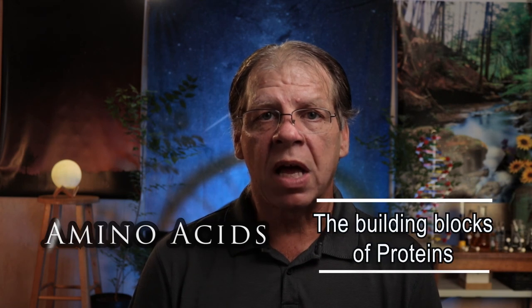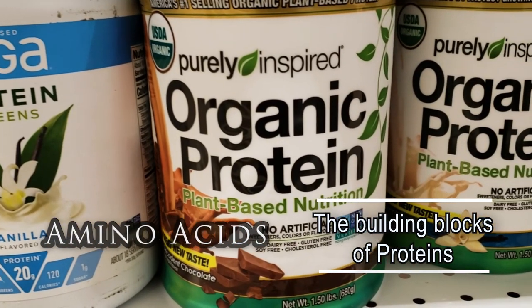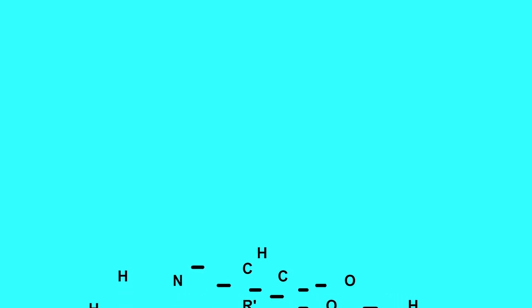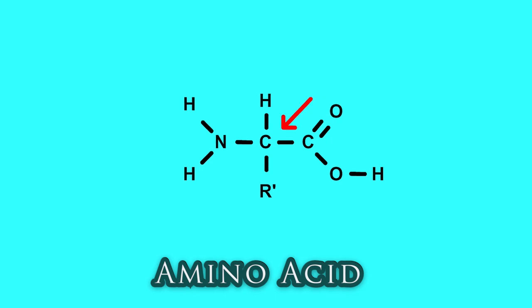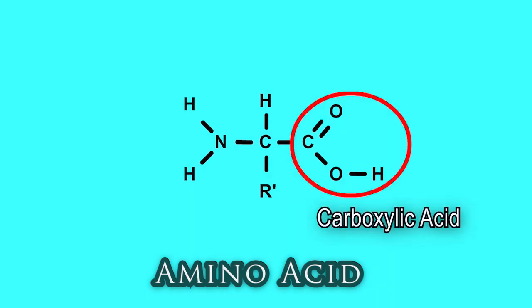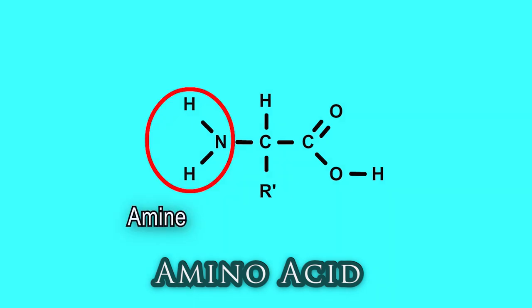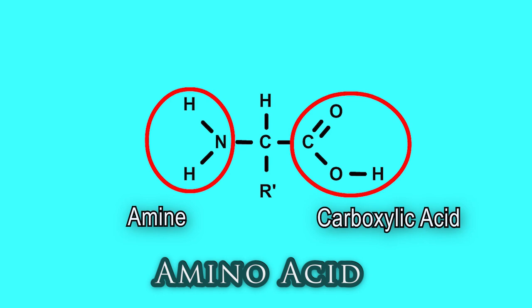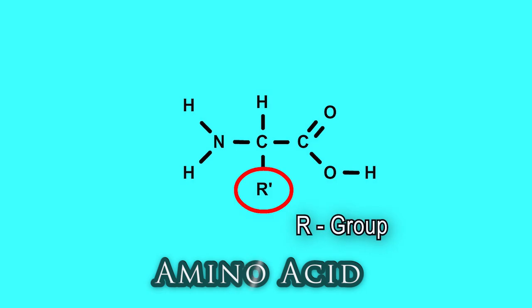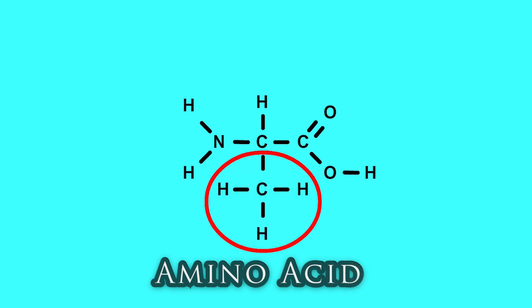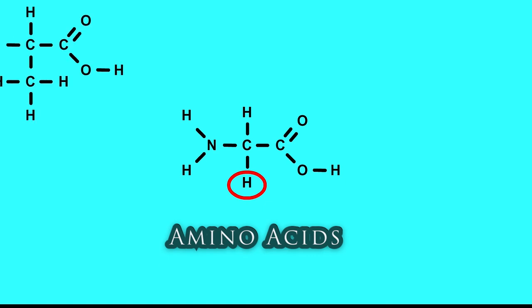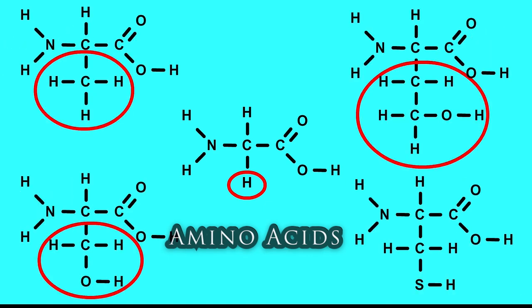Proteins are made of smaller building blocks called amino acids. There are about 23 different amino acids that make up thousands of different proteins. An amino acid has a carbon atom in the middle — on one side there's a carboxylic acid group (COOH), and on the other side there's an amine group (NH2). Amine on one side, acid on the other — amino acid. The third part is the R group. There are at least 23 different amino acids; what makes each one different is the R group, giving each amino acid different properties.